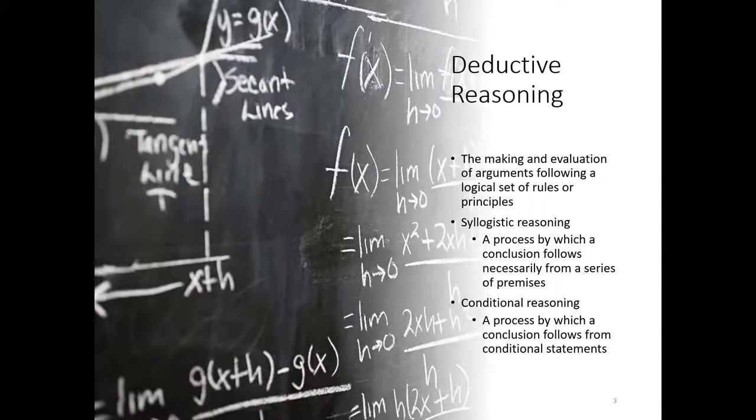The first type we'll talk about is syllogistic and the second type is conditional reasoning. Now, Aristotle developed the logical rules of syllogistic reasoning. Syllogistic reasoning is the process by which a conclusion follows necessarily from a series of premises, statements. If the premises are true, then by the rule of deduction, the conclusion must also be true as well. This is referred to as deductive validity of an argument. In logical arguments, syllogisms often take the following form. All A's are B's, that's the first premise. All B's are C's, that's the second premise. All A's are C's, that's the conclusion.